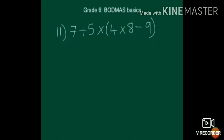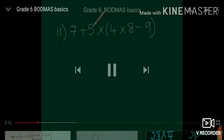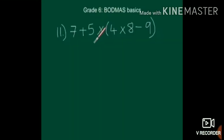Shall we take the first example? 7 plus 5 into the bracket 4 into 8 minus 9. So what are the operations you can see here? Here you can see multiplication, addition, subtraction, and brackets.